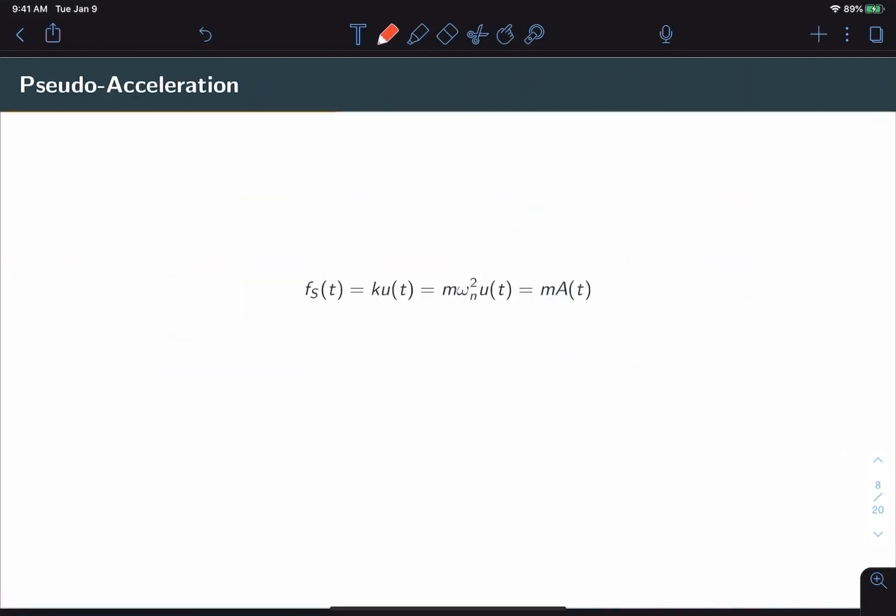Another important quantity related to displacement is this idea of pseudo-acceleration. Now pseudo-acceleration can be obtained directly from the equation for equivalent static force. We simply replace k with m times omega n squared and then we name this new variable A as the product of the natural frequency squared times u. And this A is what we call pseudo-acceleration. Pseudo-acceleration is a useful quantity for relating forces to mass instead of stiffness.